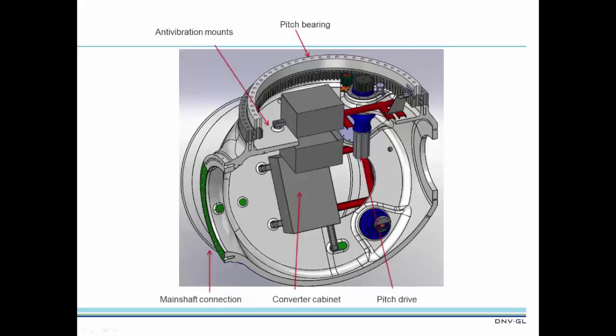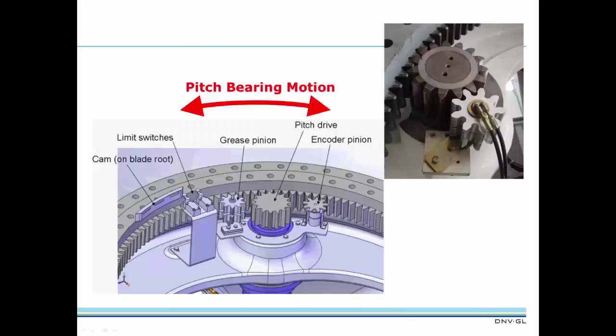The usual way to pitch the blades is to use motors called pitch actuators, or pitch drives, located in the hub of the turbine. These pitch actuators turn the blades by powering a pinion, which rotates the blade root pitch bearing. In some turbines, hydraulic pitch actuators are used rather than motors.